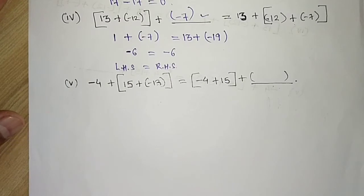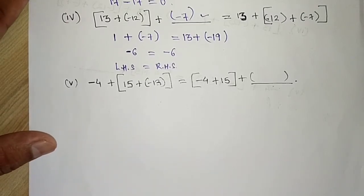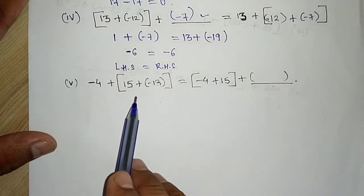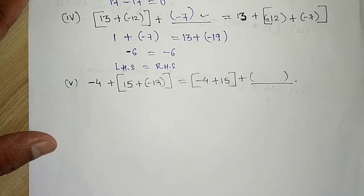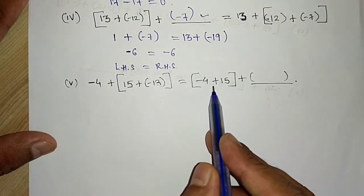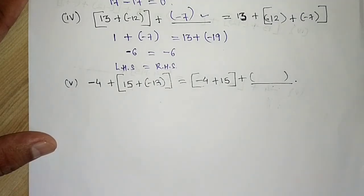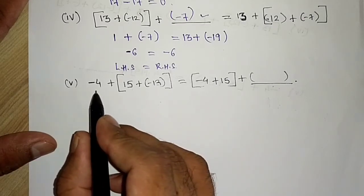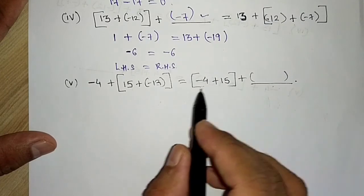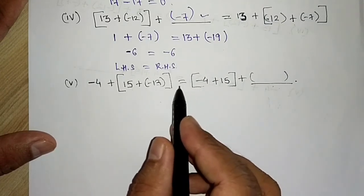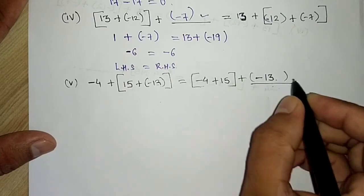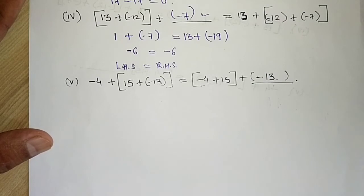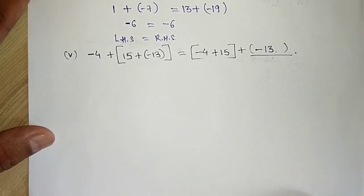In the fifth part, the same associative property applies but the brackets are arranged differently. Here the first two numbers are grouped on the LHS, and the second and third numbers are grouped on the RHS. The three numbers are minus 4, 15, and the blank. The missing number is minus 13, so the statement becomes equal.